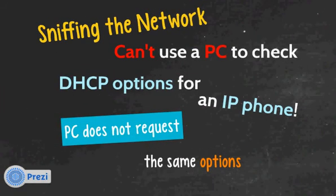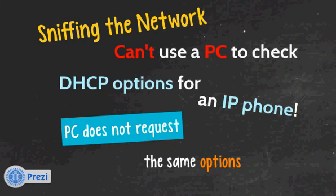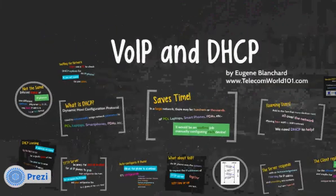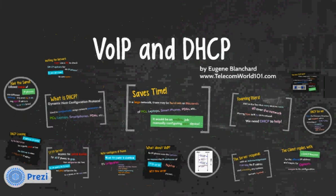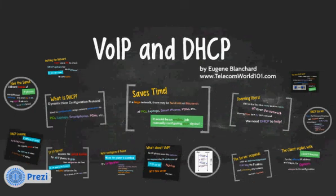One thing you can't do is use a PC to check DHCP options for an IP phone. When a PC runs through its DHCP procedure and sends out a request, it doesn't have the facilities to request the TFTP server option — it's just not part of the PC. What you'd have to do is use a PC to sniff the network using something like Wireshark, and capture an actual conversation between an IP phone and a DHCP server. You can't use a PC directly to check what DHCP options are given out, because they're only requested by specific devices. That was Voice over IP and DHCP — I'm Eugene Blanchard for TelecomWorld101.com, and I hope this was helpful.